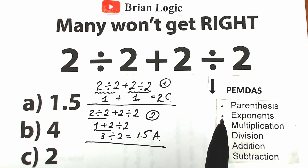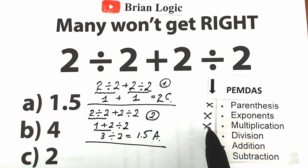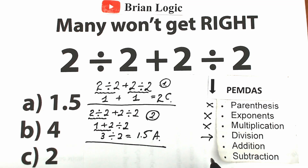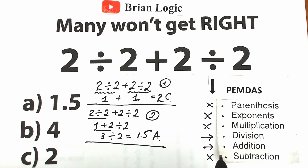Let's scan our question through the lens of PEMDAS. We don't have parentheses, we don't have exponents, we don't have multiplication. We do have division, and we have addition. We don't have subtraction. So we only have division and addition here. Higher position in PEMDAS means higher priority, so division has a higher priority than addition.